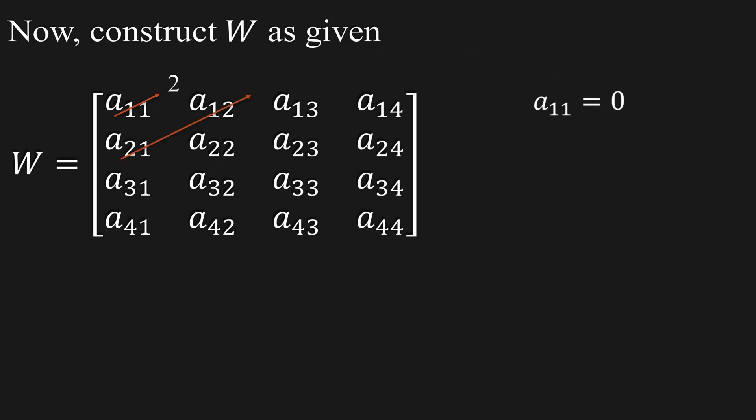The sum of indices along the arrow is 3. By the given condition, we have a21 + a12 = 0. The sum of indices along the arrow is 4. According to the given condition, we have a31 + a22 + a13 = 0.